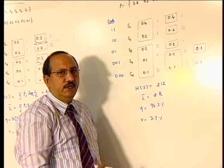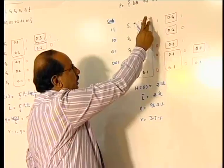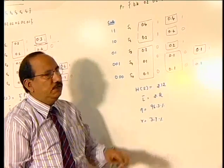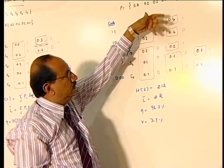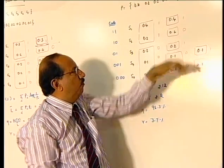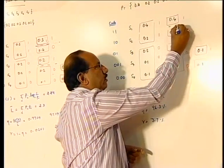So as per the Shannon-Fano algorithm, I am going to assign 1, 1 for the upper one, 0, 0 for the lower elements. Since there are two elements, further I will split this into 2: 0.4 and 0.2. There are two elements, so no other way. So I will assign 1 for the upper one and 0 for the lower one.